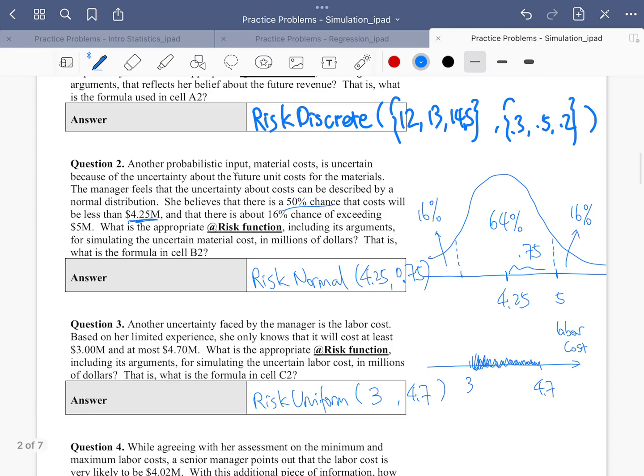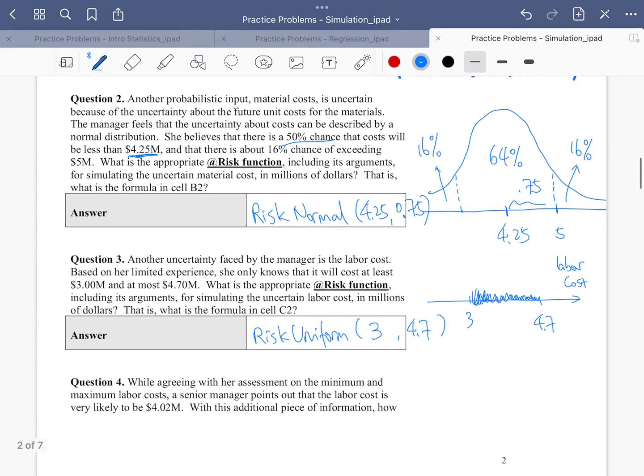And so we are left with the very last question, question four. So there's a senior manager points out to her that the labor cost, I guess that's something related to question three. Question three is also on labor cost. It's very likely to be 4.02. Well, we have 3, we have 4.7. It's going to be somewhere in the middle. So it's very likely to be 4.02.